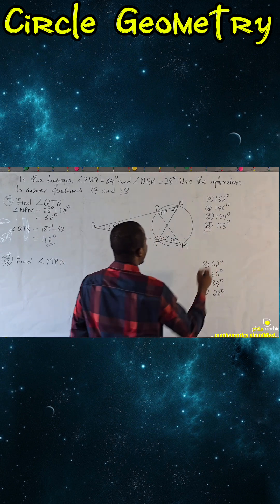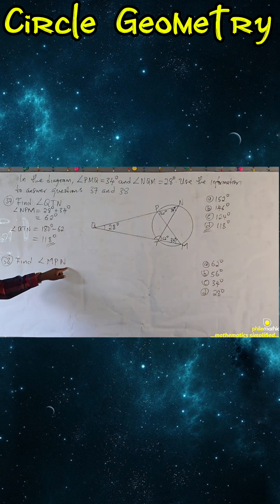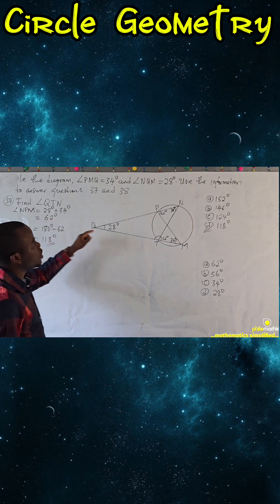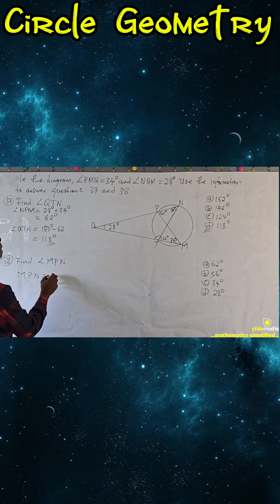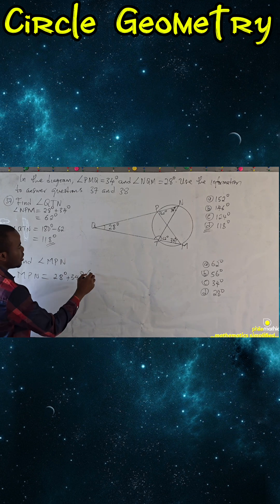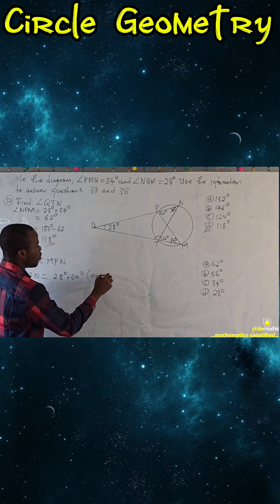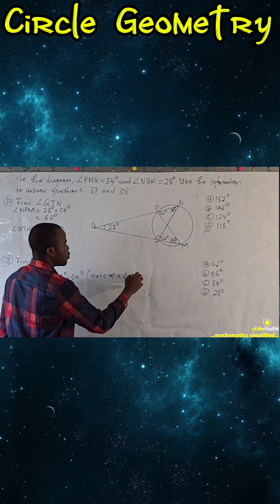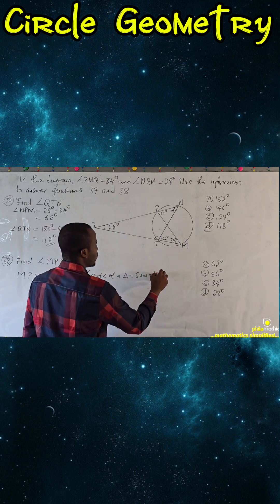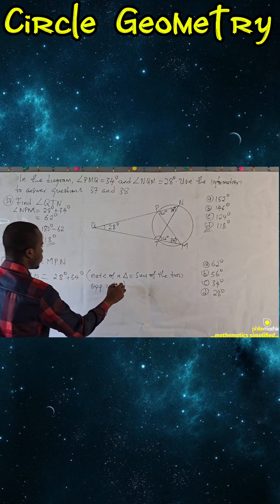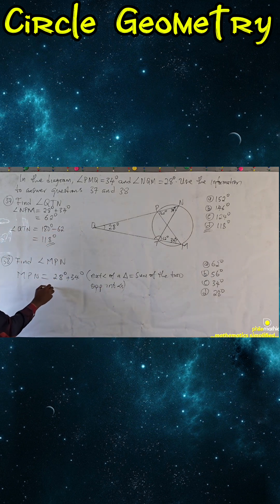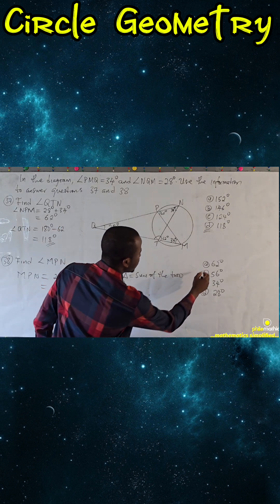The correct answer is D. Question 38 says find angle MPN. Angle MPN is simply 28 degrees plus 34 degrees, because the exterior angle of a triangle equals the sum of the two opposite interior angles, giving us 62 degrees.